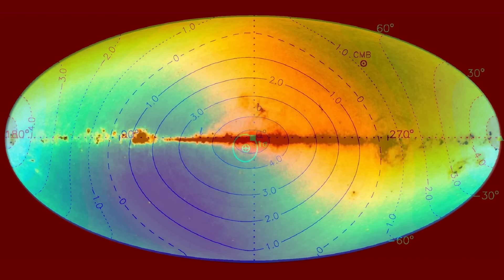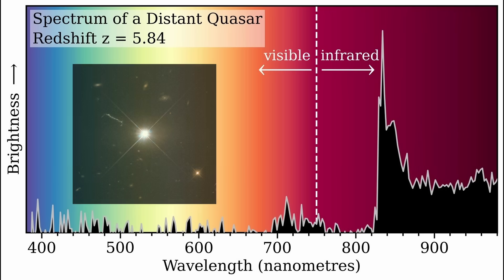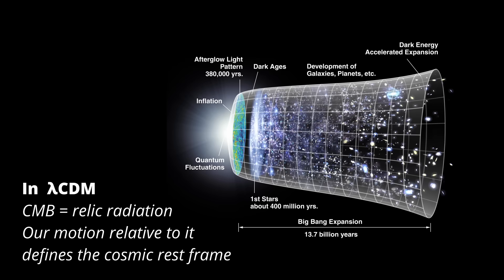The contradiction between the CMB and the quasar dipole is not a minor puzzle, it's a fundamental crisis. Inside the standard model, the only way out is to dismiss the quasar results as an illusion. But if the quasar data is real, then the cosmic rest frame defined by the CMB no longer means what cosmologists think it does.